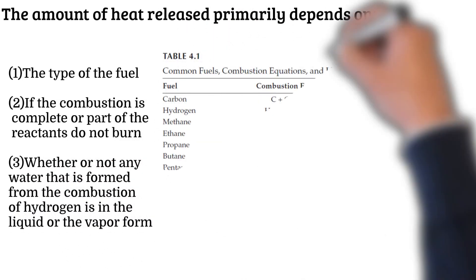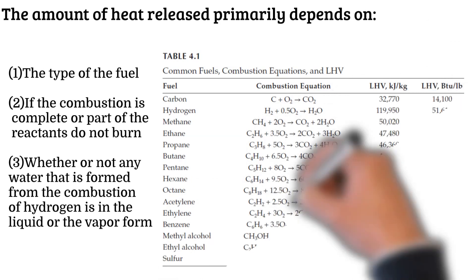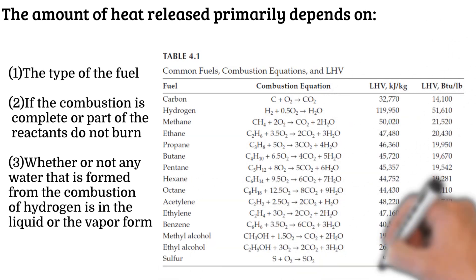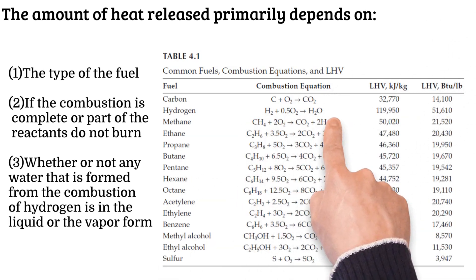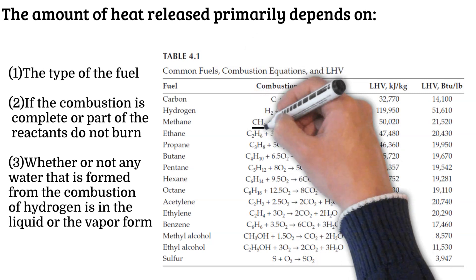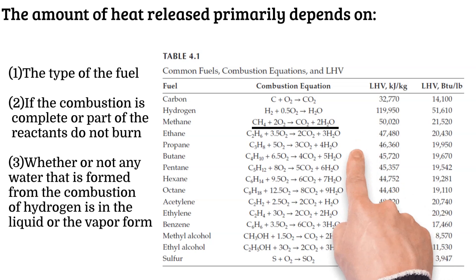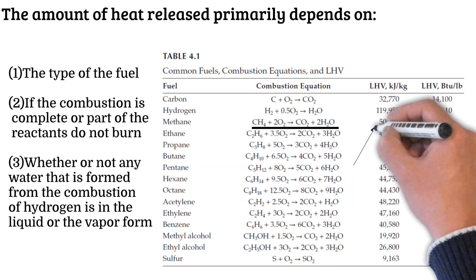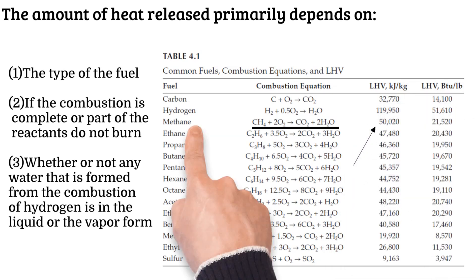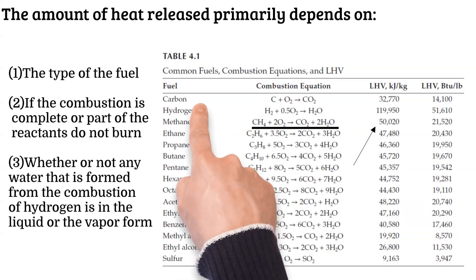The lower heating values of different fuels are given in the table. Look into the table, for example, if we burn one kilogram of methane gas it will give you carbon dioxide and water, but the amount of heat released during this combustion is 50,020 kilojoules. Similarly, you can see other fuels like ethane, octane, hydrogen, etc.